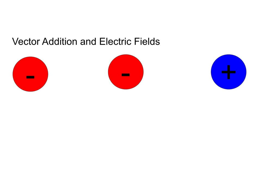The first thing I need to think about is vector addition in electric fields. When we are adding up the individual forces acting on an object to find our net force, it's important that I'm very careful about the directions of each force. So let's go ahead and take a look at how we find the net force on the middle of my three charges.